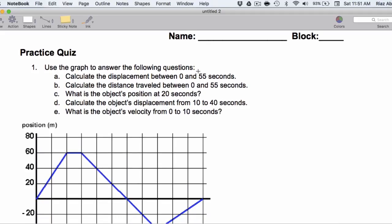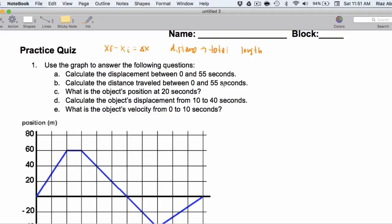So, let's just remember, displacement is your final position minus your initial position, that's delta x. And distance is the total length covered. And we're going to be using both those facts when we take a look at questions 1a through 1e.